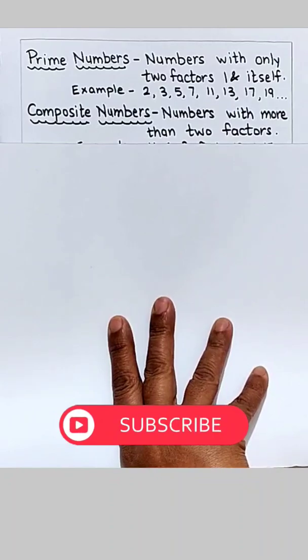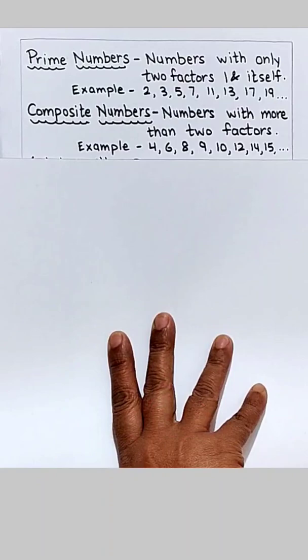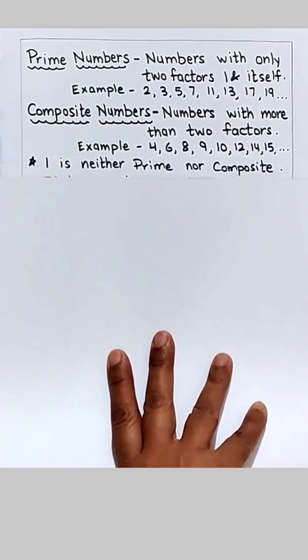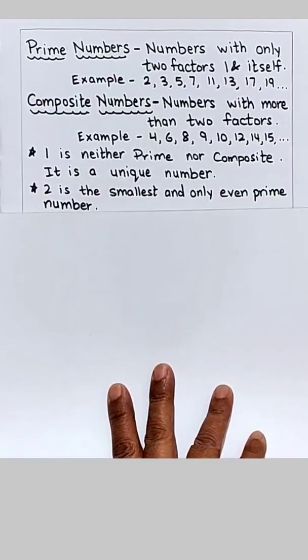Numbers with more than two factors are composite numbers. For example 4, 6, 8, 9, 10, 12, 14, 15 and so on. One is neither prime nor composite. It is a unique number. Two is the smallest and only even prime number.